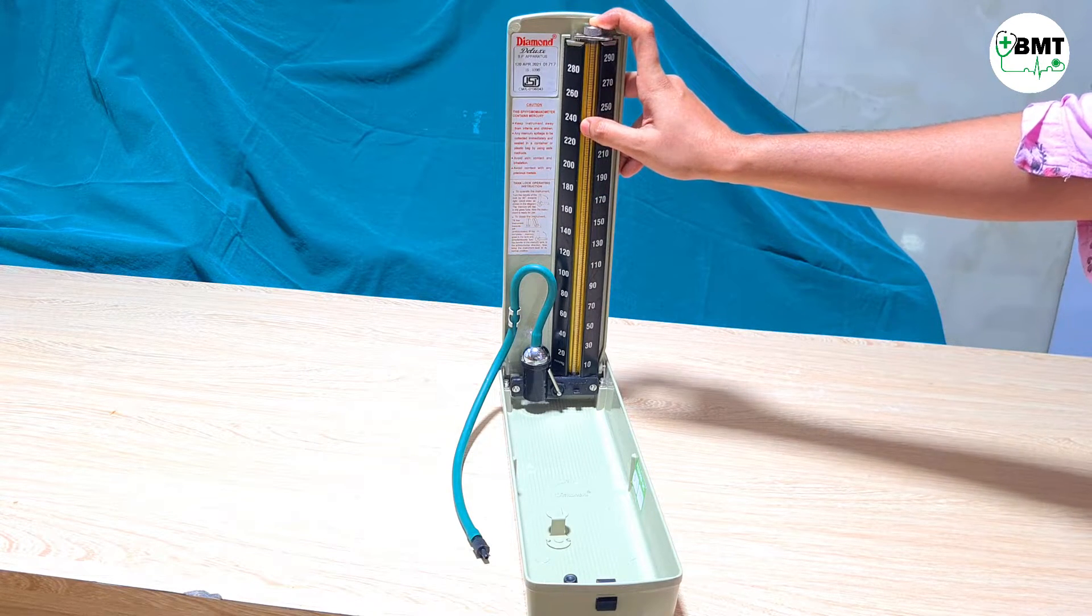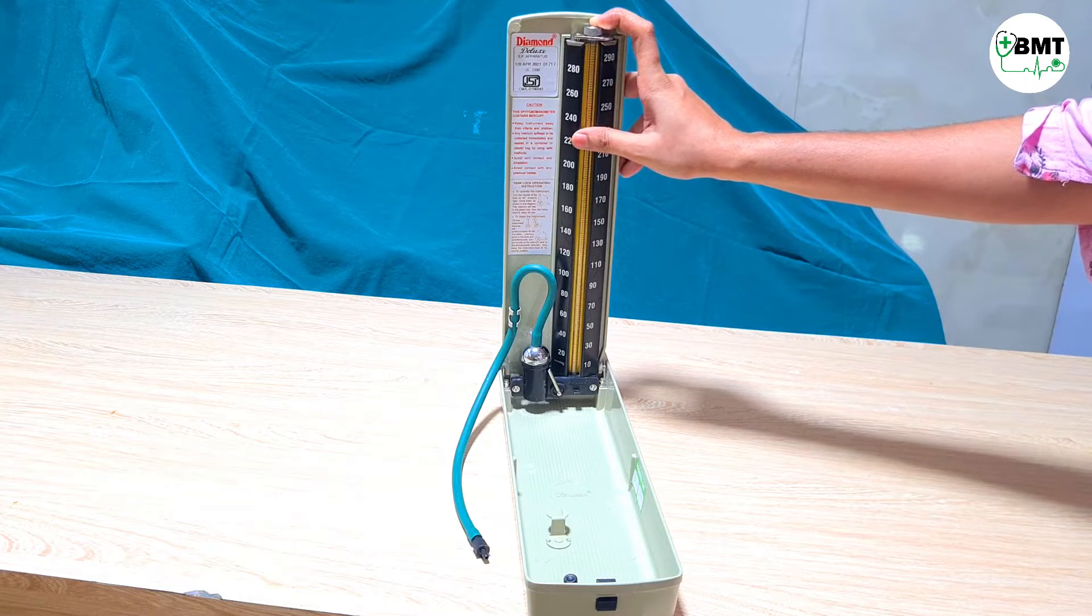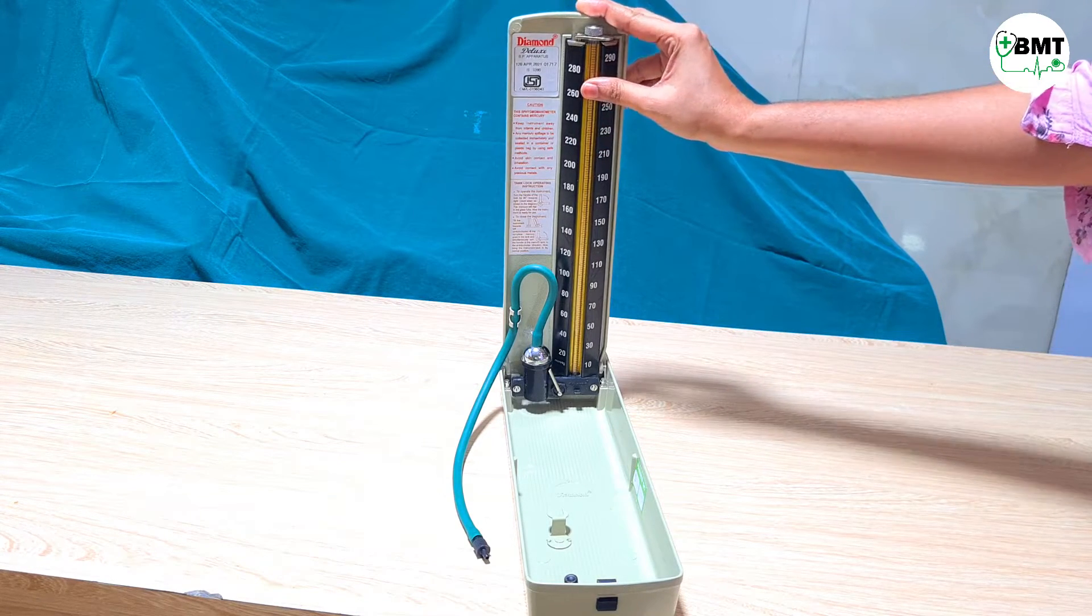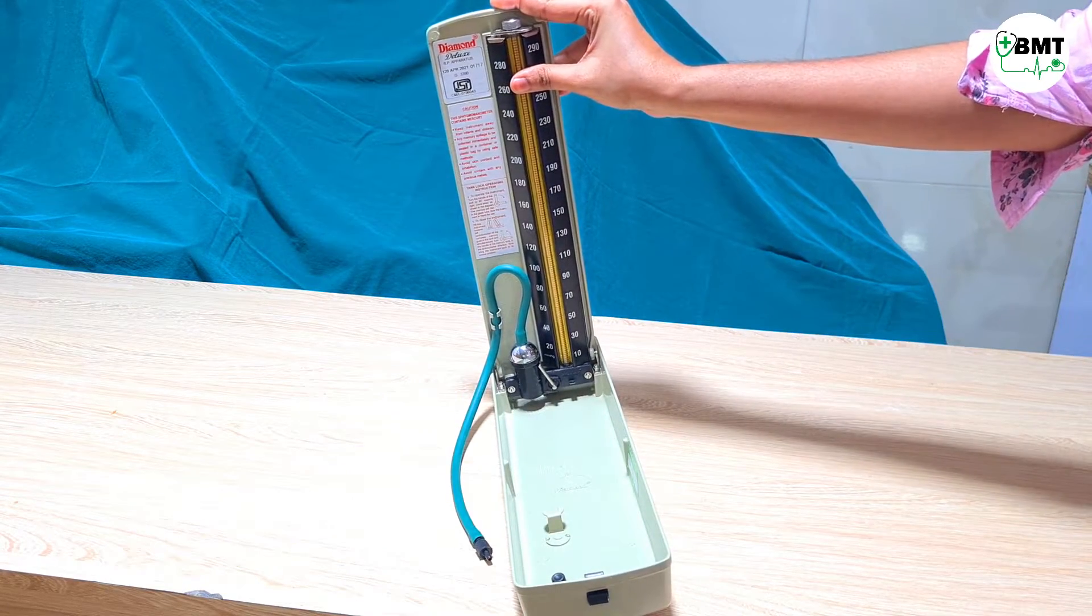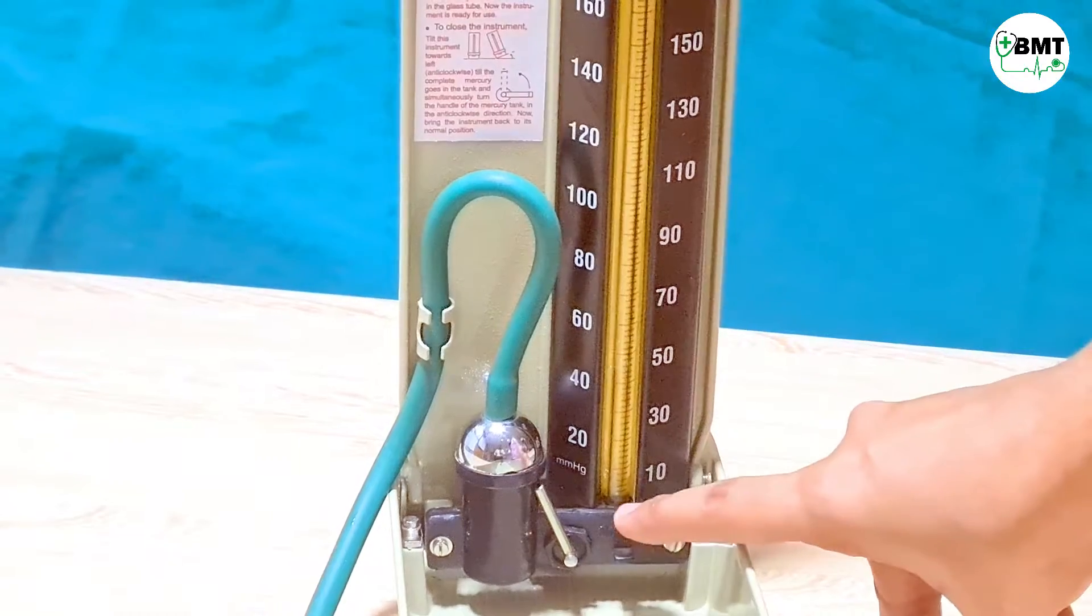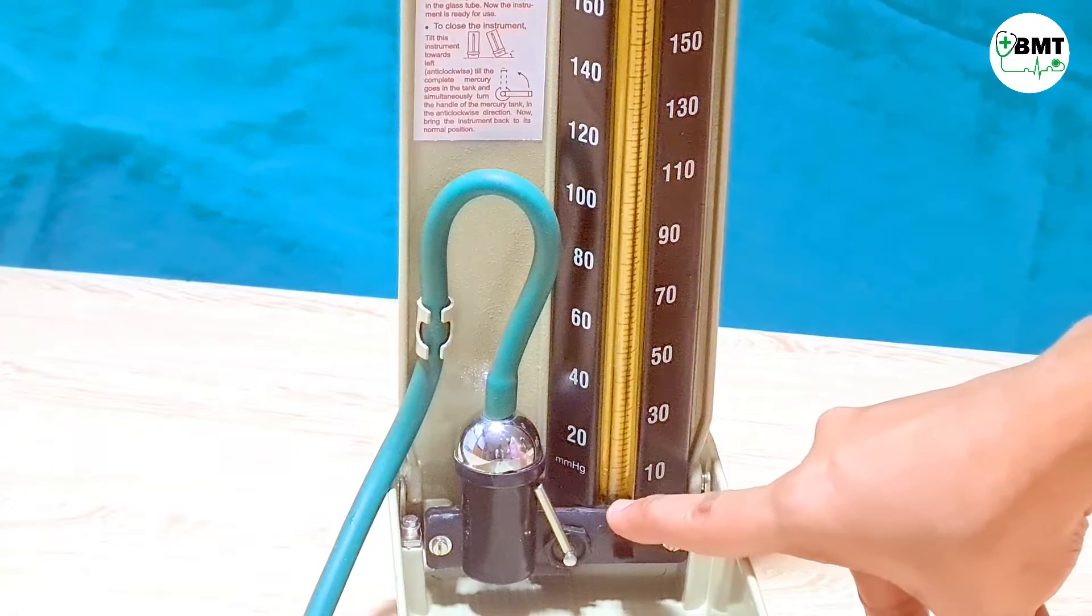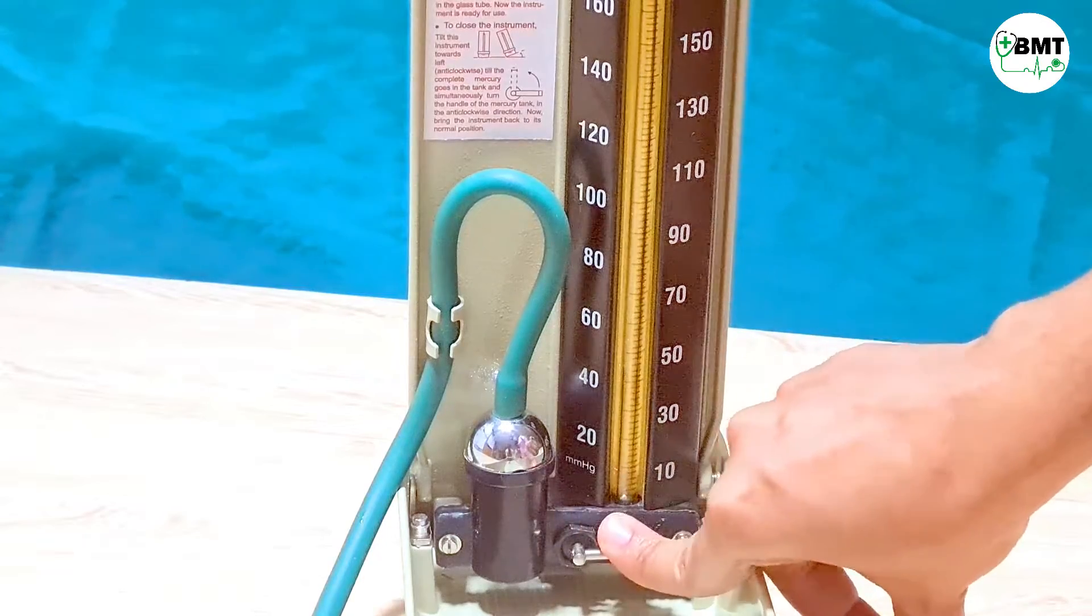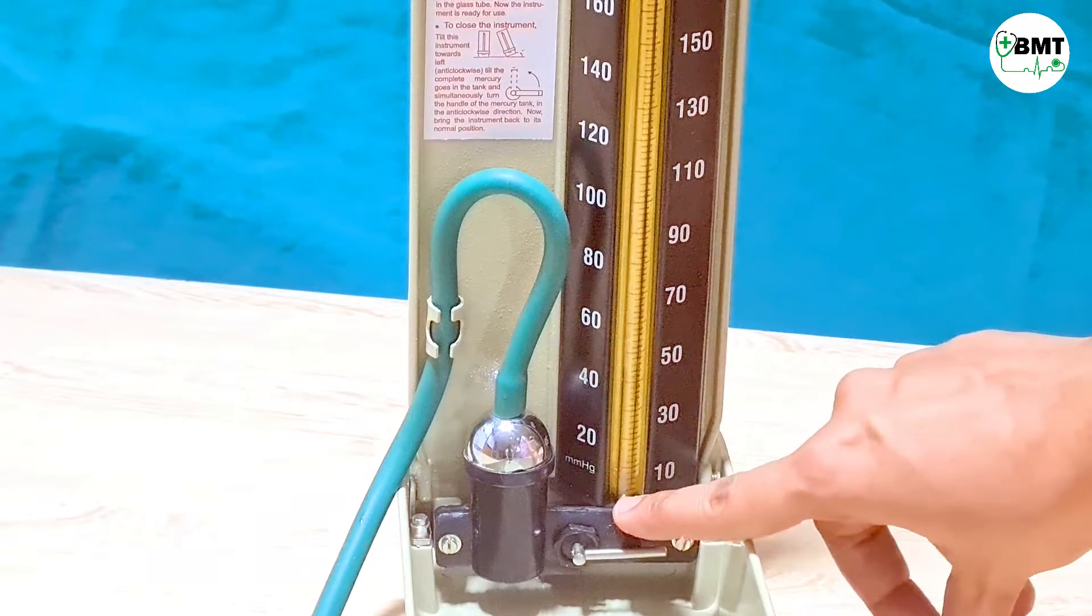If this tube is damaged or broken, then you can replace this tube as shown before. This tube is easily available in the market as well. Make sure that whenever you replace this tube, you have to slightly tilt this and then lock it over here. Now let us check that mercury has reached zero position or not. Let us unlock it. Now it is on zero, so this is calibrated.